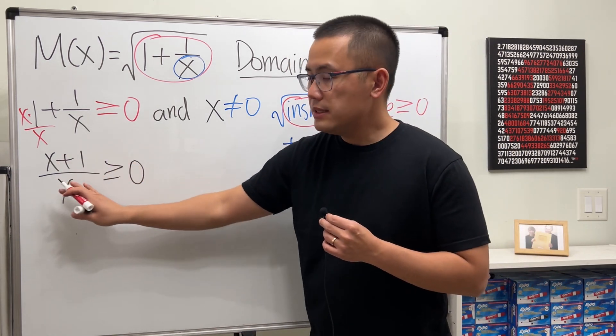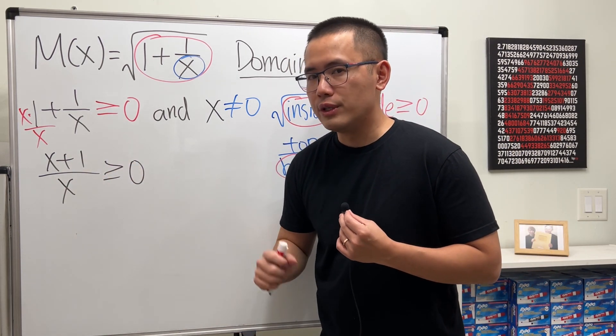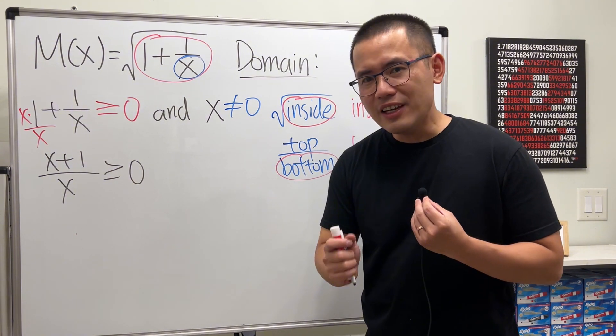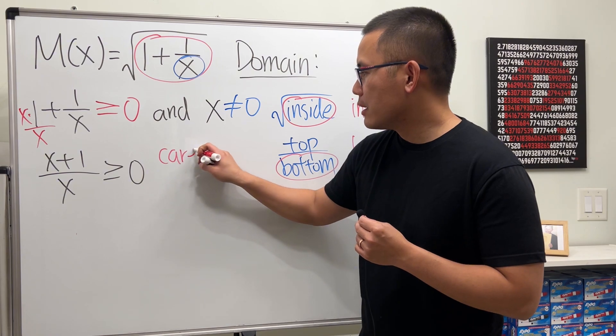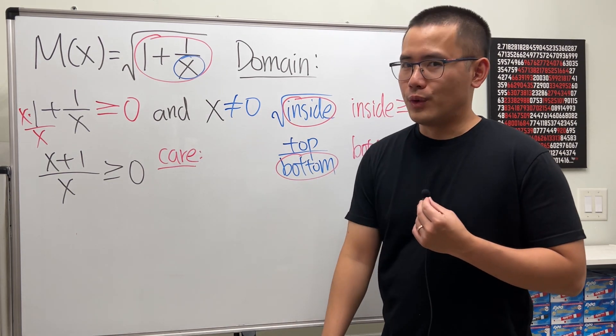And for this inequality, because it's a rational inequality, we have to do it carefully. And the safer way to do it is, let's find out the numbers that we care.